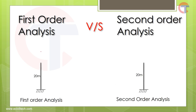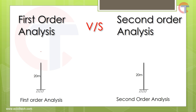Let us understand first order analysis and second order analysis. First order analysis is also called linear analysis. In this type of analysis we put all the loads at once and calculate the member stresses and the reactions. For example, look at this 20-meter-high mast. Let us assume one vertical downward load of 5 kilo Newton and a lateral load of 2 kilo Newton is acting at the tip of the mast.